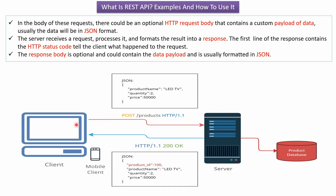Here you can see the client sending a request to the server to create a product. The request body contains product details in JSON format — product name, quantity, and price. The server receives, processes the request, and creates the product in the product database. Then the server formulates a response in JSON containing the product ID, product name, quantity, and price. Along with the response, the server sends an HTTP status code to inform the client what happened — in this case status code 200, meaning the request was successful.